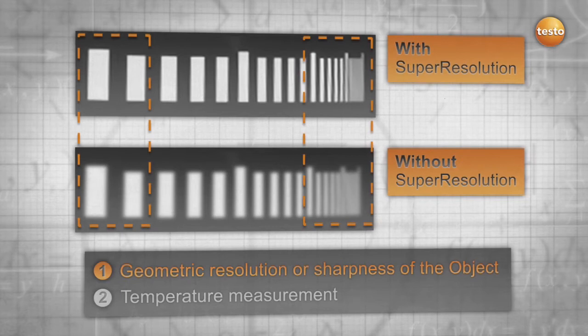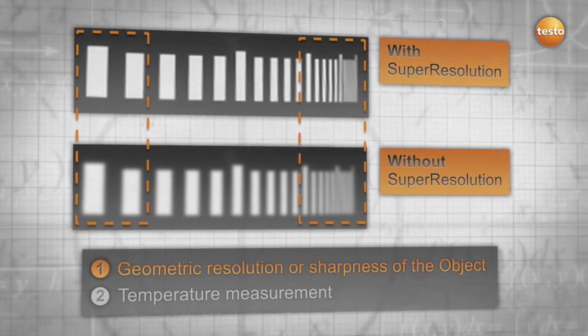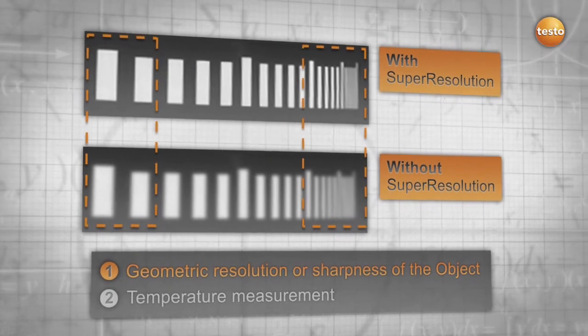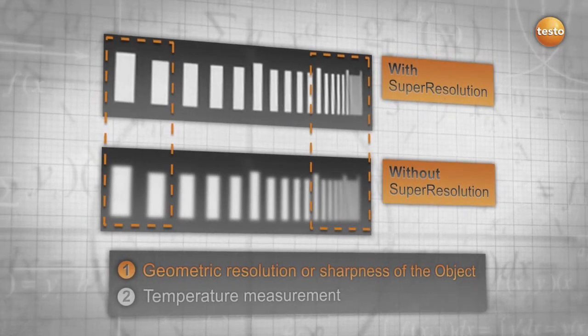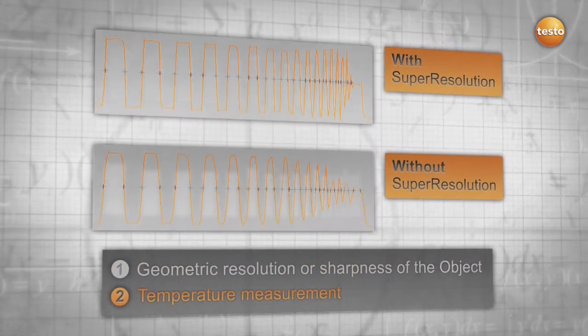Without Super Resolution, you get a blurry image. The smaller and denser the slots, the more blurry the image. With Super Resolution, you get a sharper and more detailed image. A similar effect can be observed when we analyze the accuracy of the measured temperature.